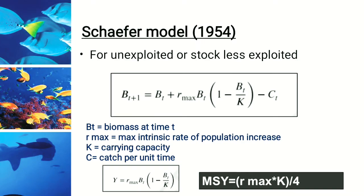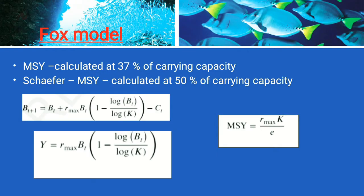The Schaefer model, introduced in 1954, is also known as the surplus production model or holistic model, applicable for unexploited fishes. In the equation, Bt is the biomass at time t, Bt+1 is the biomass at time t+1, Rmax is the intrinsic rate of population increase, K is the carrying capacity, and C is the catch per unit time. By knowing Rmax, we can calculate the yield, and from that we can calculate Maximum Sustainable Yield, which equals Rmax multiplied by K divided by 4.